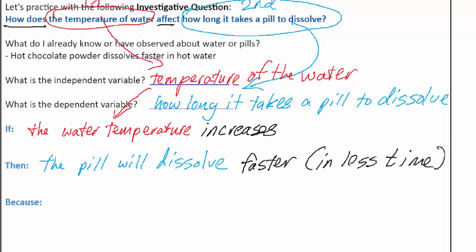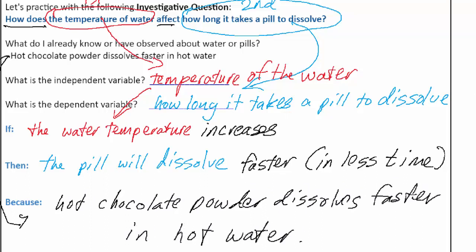Okay. And so when I get to the because statement, I'm actually going to use that same background knowledge that I wrote before. This is the reason that I'm making this prediction. It's because the hot chocolate powder generally dissolves faster in hot water. And that's why I'm making a prediction in this lab that it will do something similar. Pause the video as needed to allow catch-up time.